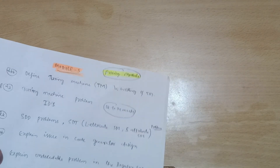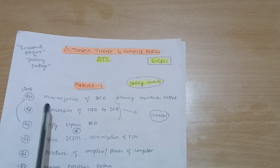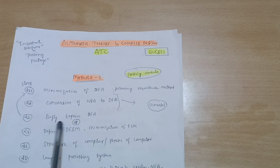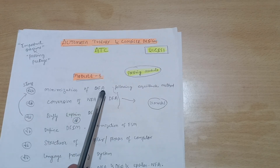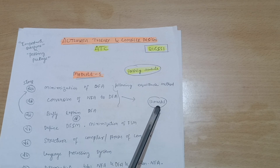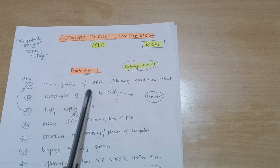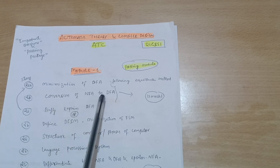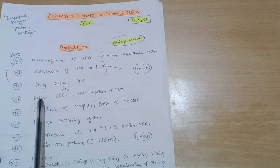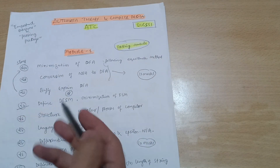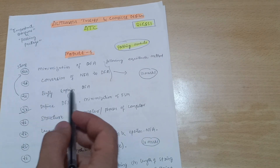The three passing modules are Module 1, Module 2, and Module 5. In Module 1, you have to go through the minimization of DFA — or they may ask you to briefly explain DFA — and there will be problems on minimization of DFA. This is the most important problem; it may be a 12-mark question. Compared to the rest of the modules, Module 1 is the easier one. The conversion of NFA to DFA is also a most important problem. Define DFSM and its minimization — this is the same concept as DFA.